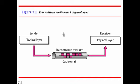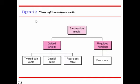Transmission medium is divided into two classes: the first is guided and the second is unguided. The guided medium is the wired one and the unguided medium is the wireless. Under guided or wired medium, the categories are: first, twisted pair cable; second, coaxial cable; and third, fiber optic cable. In the case of unguided wireless medium, we have free space.